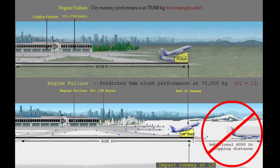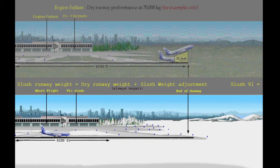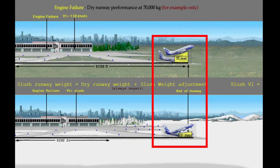Since the available runway cannot be increased to accommodate these different conditions, we provide weight reductions and V1 adjustments to determine a reduced takeoff weight which can safely be operated from the same runway. The weight adjustments result in a reduced weight and adjusted V1 speed, which require the same distance as the baseline dry runway condition.